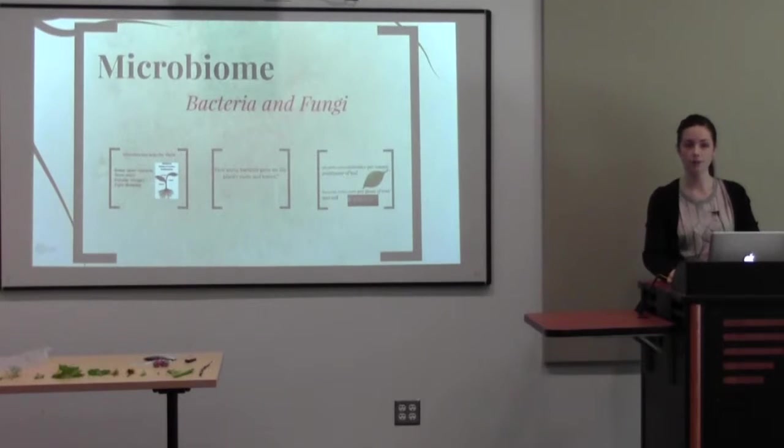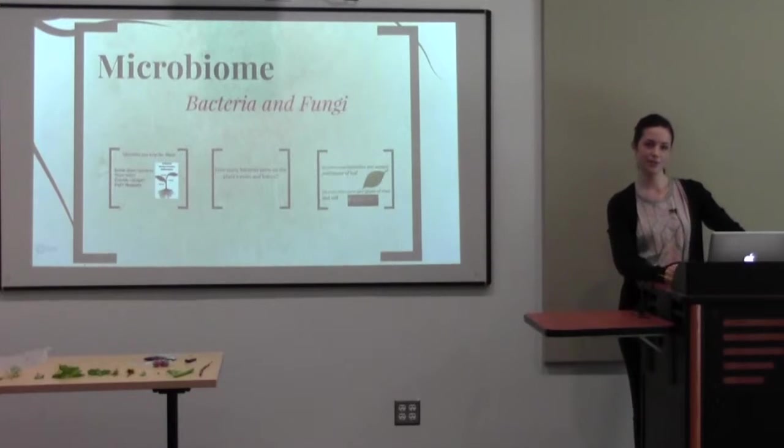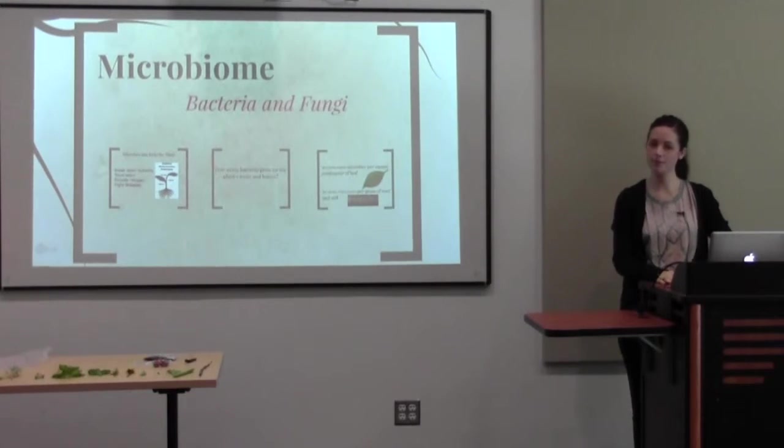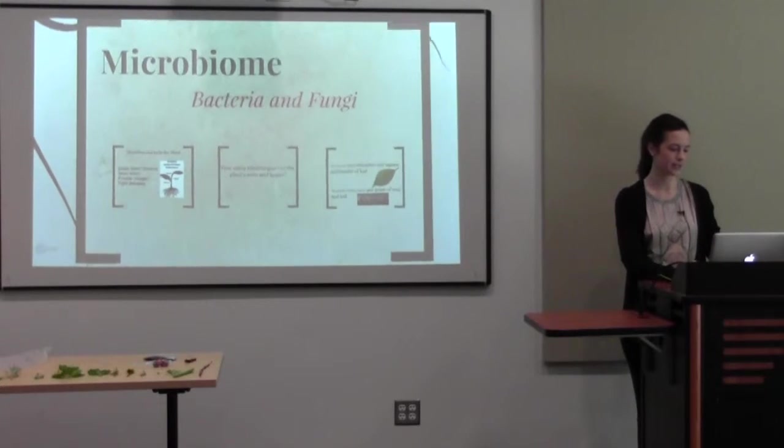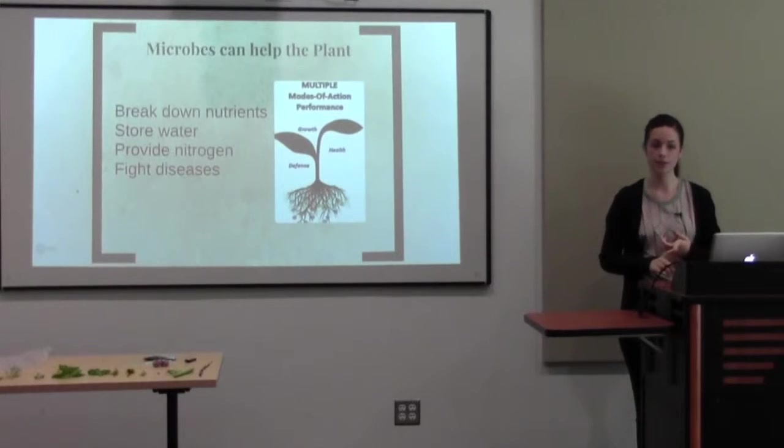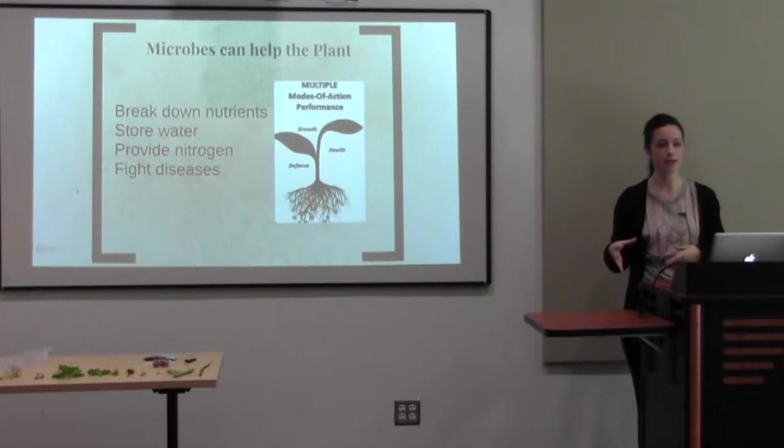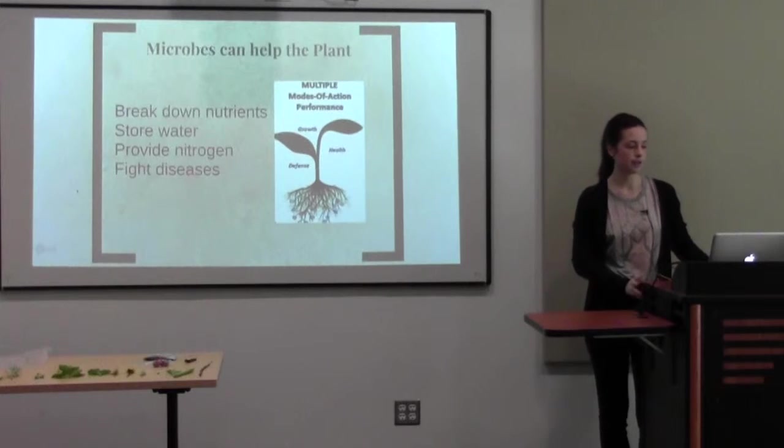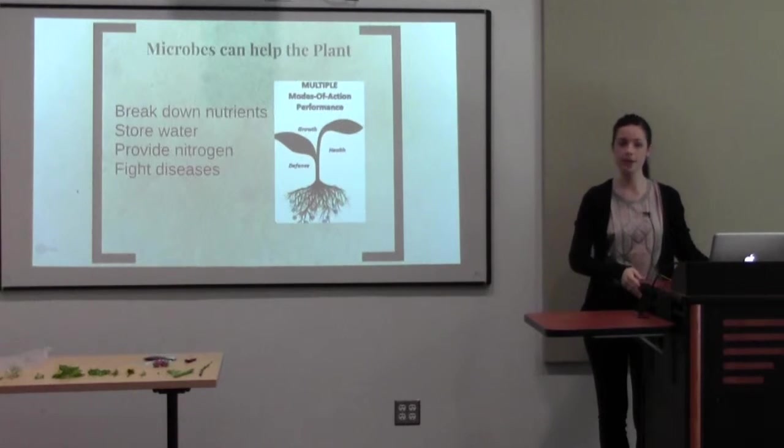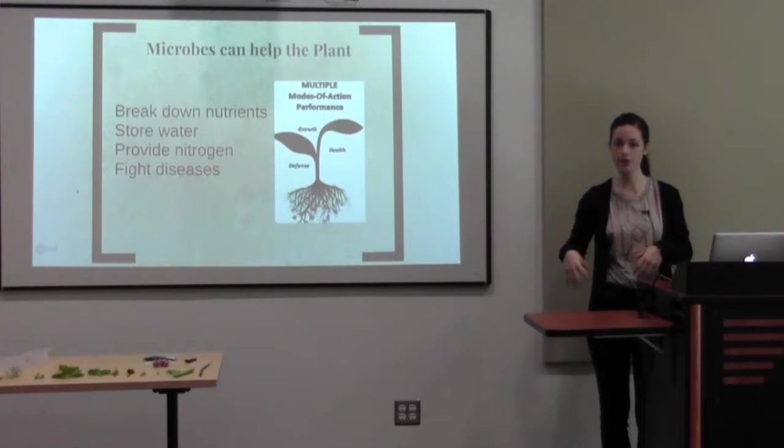Bacteria and fungi are a big part about how plants grow. Normally we don't think about them unless we're talking about getting sick, like mushrooms. Mushrooms and fungi like to live together to try to help each other. Bacteria and fungi that are good can help the plant. Microbes will help them break down nutrients. They'll also help to store the water for the plant if the plant ever gets too thirsty. They provide nitrogen and they can also fight diseases. If your plant has a lot of good microbes or good bacteria on it, it'll help.